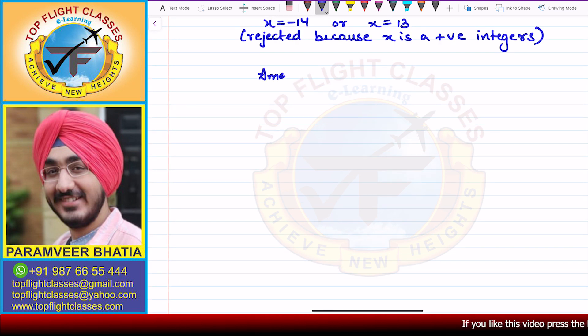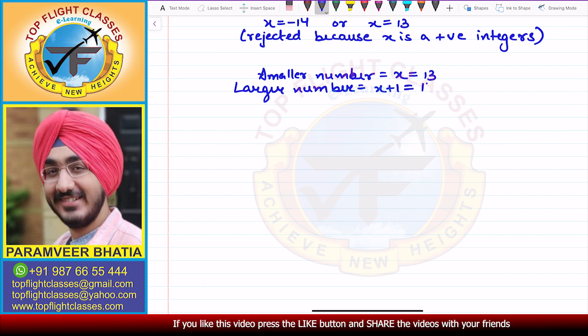So x comes out to be 13. So if the smaller number is equal to x, that is 13. So what will be larger number? x plus 1, that is 14. And that is the required solution for this question.